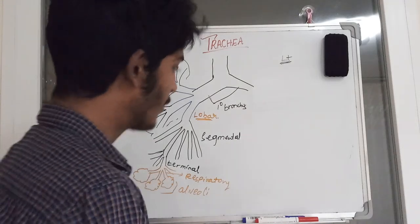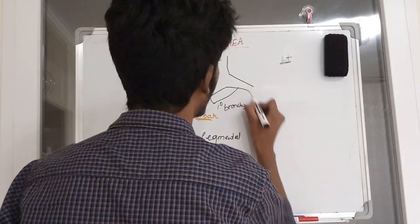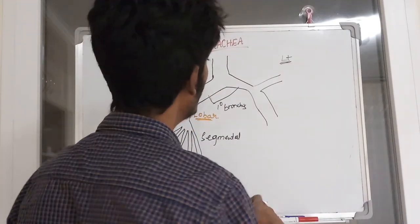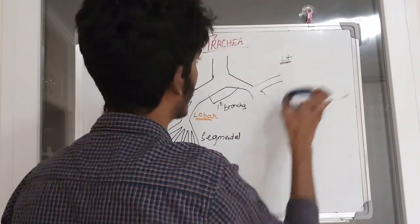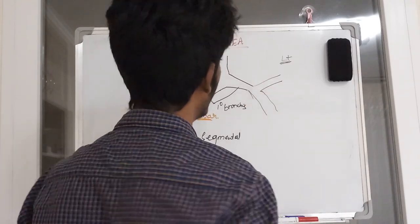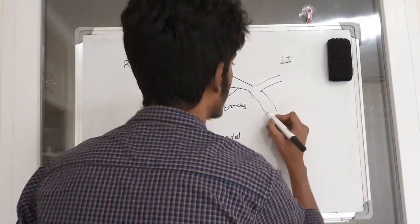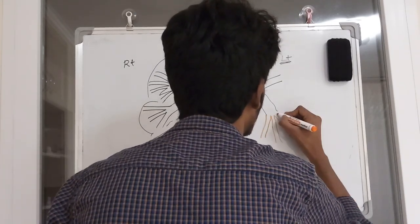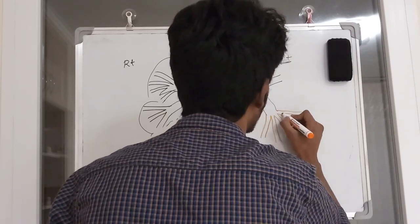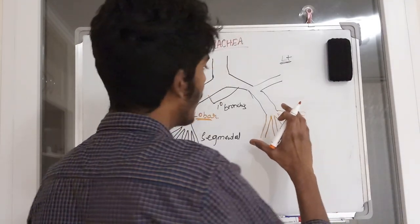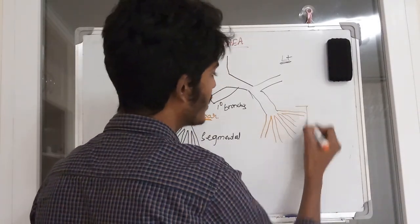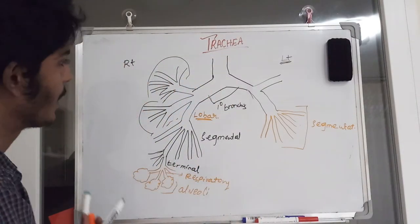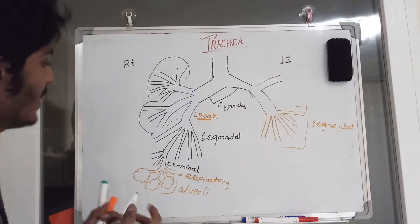In the left lung, there are two lobes, so the left primary bronchus divides into two lobar (secondary) bronchi. Each lobe of the left lung has five segments, giving rise to five segmental bronchi. These segmental bronchi then divide the same way into terminal bronchioles, respiratory bronchioles, and alveoli.